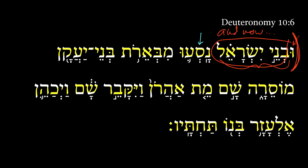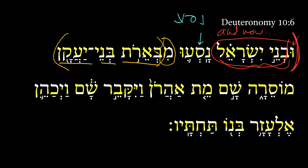They set out. Here we have a Qal perfect 3CP of the root NASA, meaning 'to set out.' They set out from — there's your mem preposition — from the proper name Be'erot B'nei Ya'kan. There is some discussion about this name in the Samaritan Pentateuch, but most English translations are going to go with the proper name Be'erot B'nei Ya'kan.